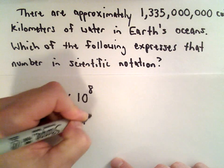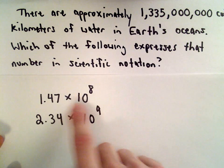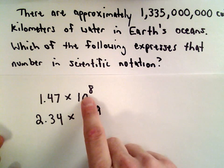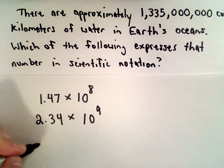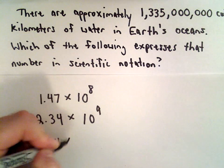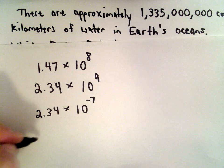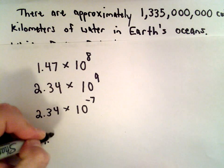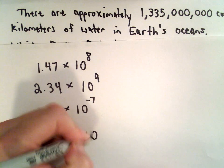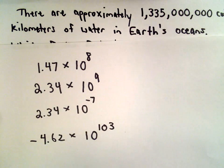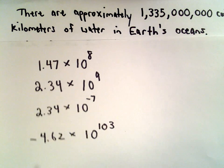So this would be an example of a number in scientific notation: 2.34 multiplied by 10 to the ninth. We're going to be multiplying by 10 to some power, like 10 to the eighth or 10 to the ninth. I could have 2.34 multiplied by 10 to the negative seventh. Again, my number could be negative, like negative 4.62 multiplied by 10 to the one hundred and third power. Those are all examples of numbers in scientific notation.